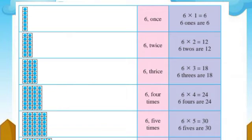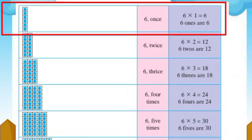Let's learn the 6 times table — sahacha padha shikuya. Look at these pictures. In the first row, there are 6 dots — sahati madhe lelia aahet. Sahaha ek veda: 6 ones means 6 multiplied by 1 is equal to 6. 6 ones are 6 — sahagunile ek barobar sahaha.